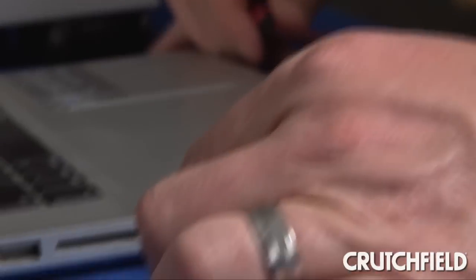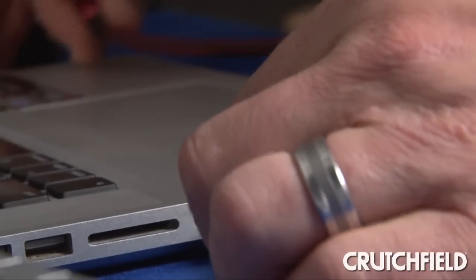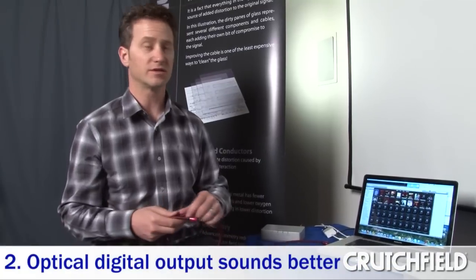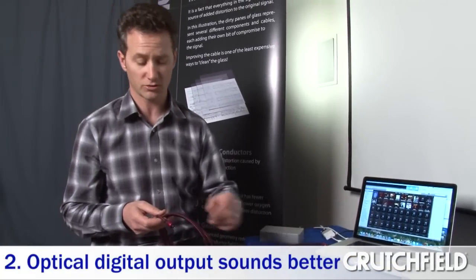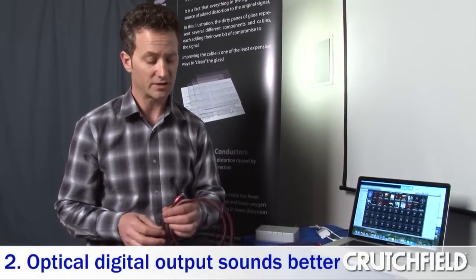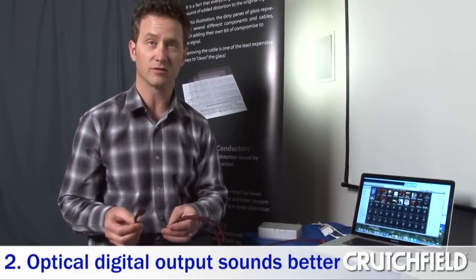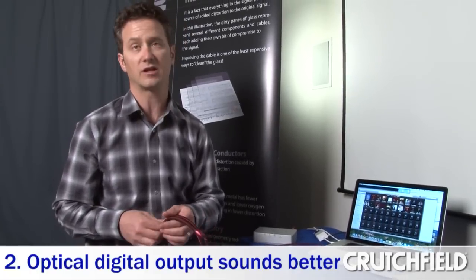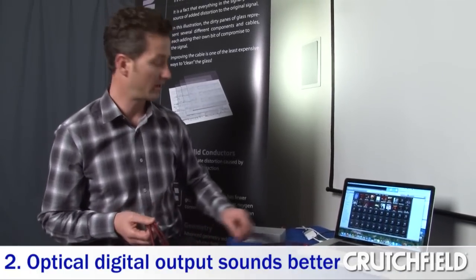It plugs into the same port as the headphone, overrides the headphone, and now you've got digital out. You can send all the data stored either in your computer or on an external hard drive digitally across to the receiver or the DAC, and have it decoded there. That'll give you significantly higher resolution than just using the analog output.